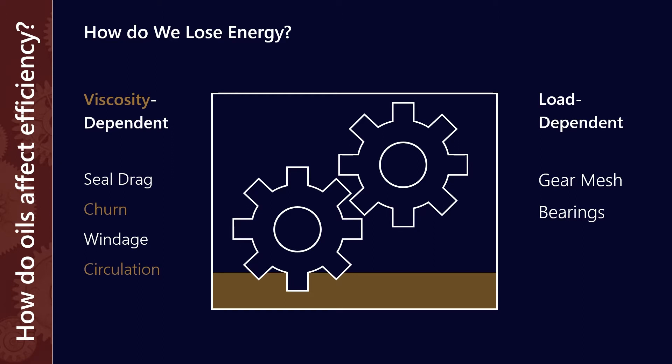Lower viscosity means lower energy loss. Higher viscosity means higher energy loss, because that's all work that we're putting in to move fluid around the gearbox that's not contributing to conversion of torque from one gear to the other.